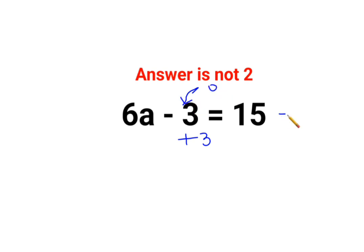So in that case, you will add 3 on both sides. So you will have 6a + 0, because -3 + 3 = 0, equals 15 + 3, that is 18. So basically you are saying 6a = 18.